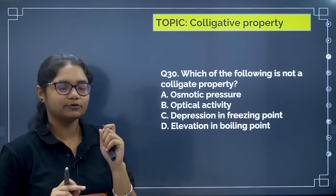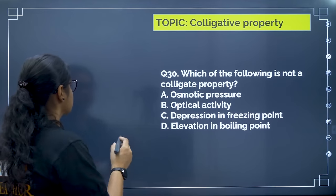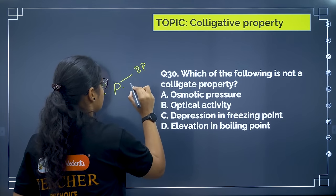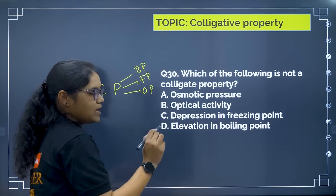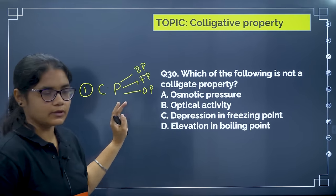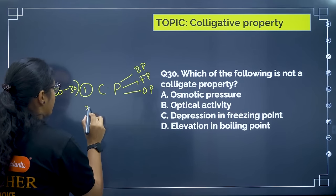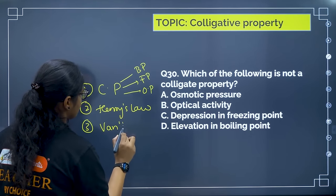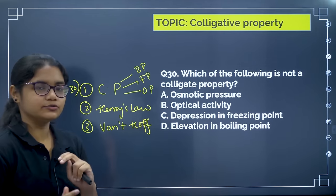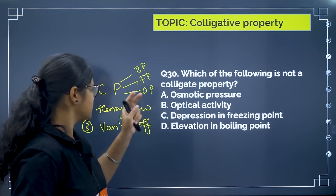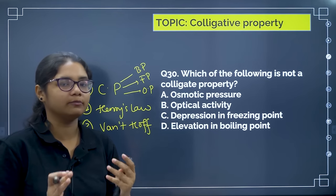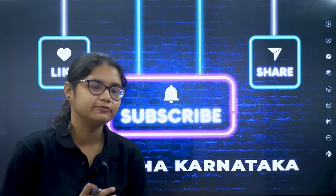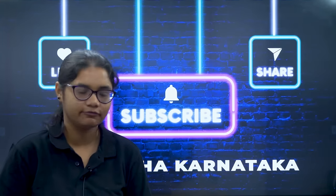We've completed all 30 questions. Key topics to focus on: first, all four colligative properties with special emphasis on elevation in boiling point, depression in freezing point, and osmotic pressure. Relative lowering of vapor pressure is asked less but still important. Solve 20-30 questions on these topics. Then focus on Henry's law, followed by Van't Hoff factor. Concentration terms need basic formula knowledge but fewer exam questions. Thank you — if this series helps you, please like, share, and subscribe.